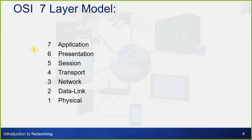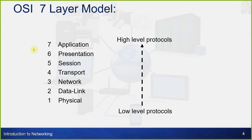The OSI seven-layer model has seven layers. At the top is the Application layer, then the Presentation layer, Session layer, Transport layer, Network layer, Data Link layer, and at the bottom is the Physical layer. So the lowest level protocol is physical and the highest level is the application layer.